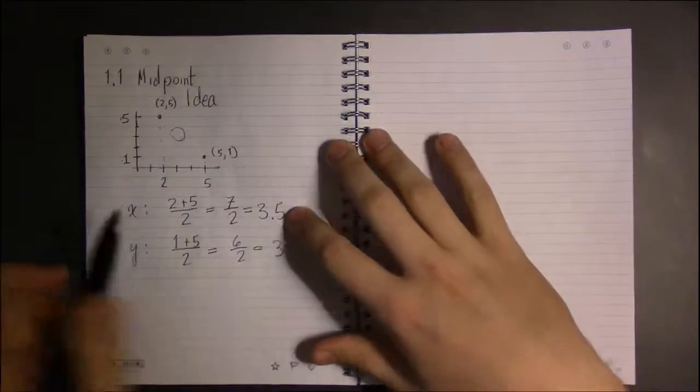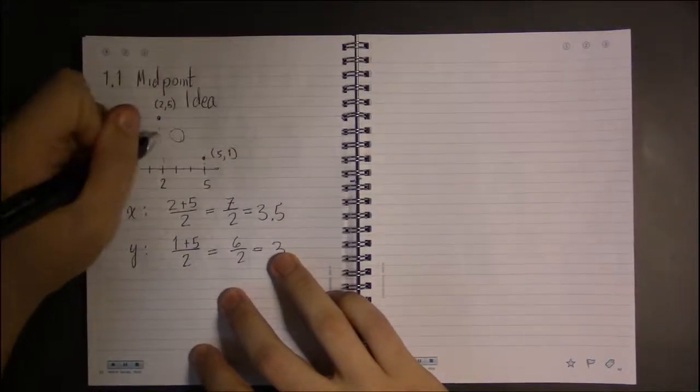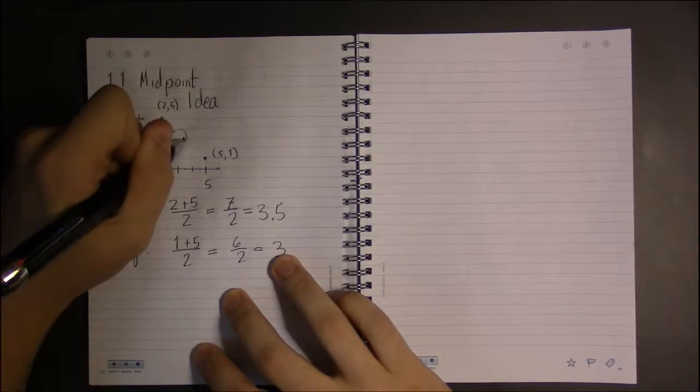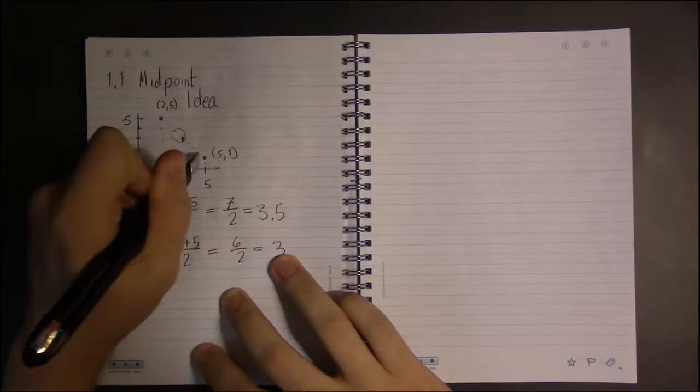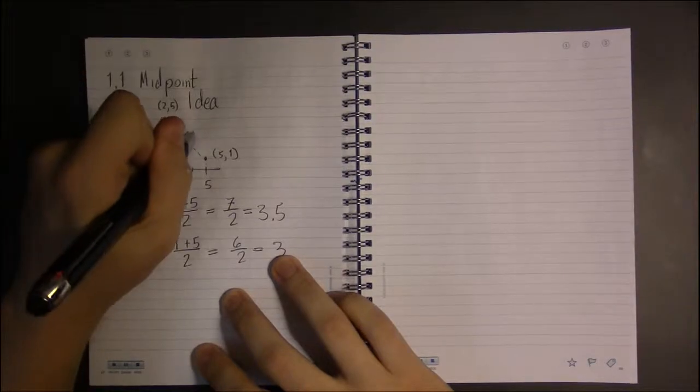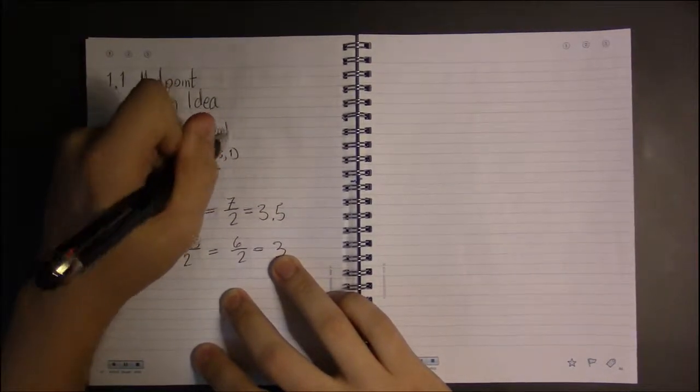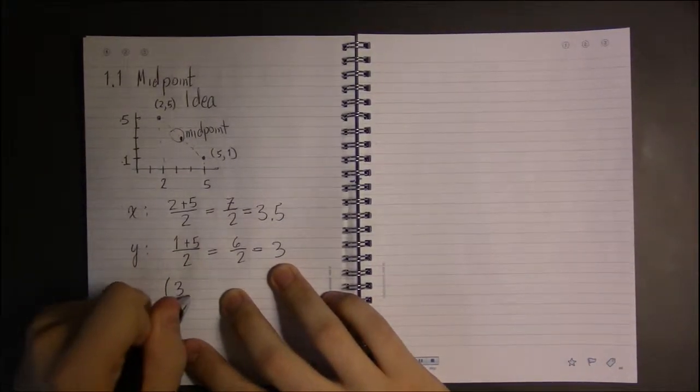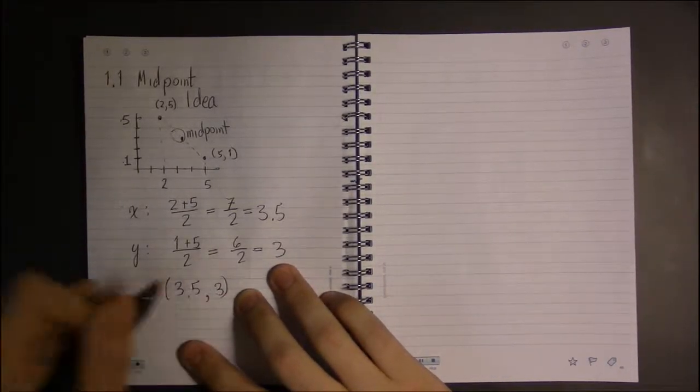is the point 3.5, so somewhere about here, and 3, so somewhere about here. Assuming my drawing isn't too crappy, this should be about halfway between our two points. And that's it - the midpoint here is (3.5, 3).